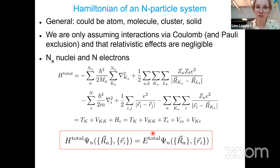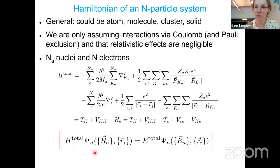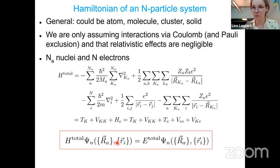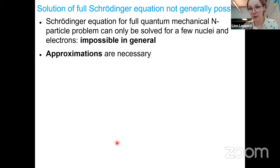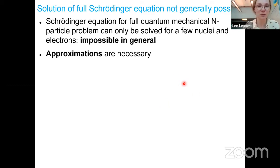Assuming we are not interested in dynamical effects or time dependence, we solve the stationary Schrödinger equation. The important thing is that this wave function depends on all the positions of all the nuclei and all the electrons — it's a highly complicated, high-dimensional object. In general, this equation is impossible to solve for more than just a couple of electrons and nuclei because it's just too complex. So we need to make approximations. The question is which approximations distort the physical picture and which ones are harmless.